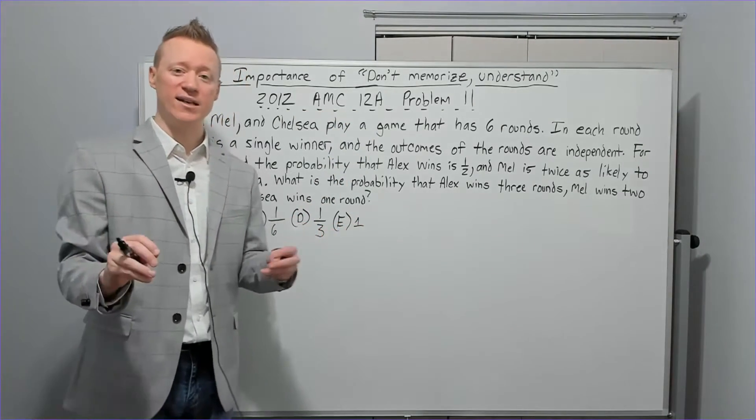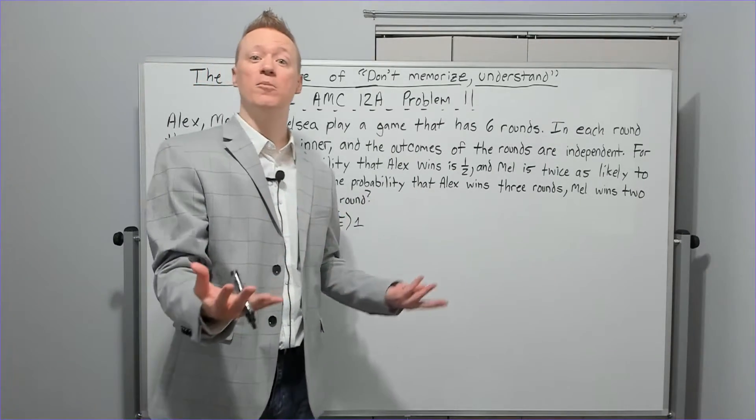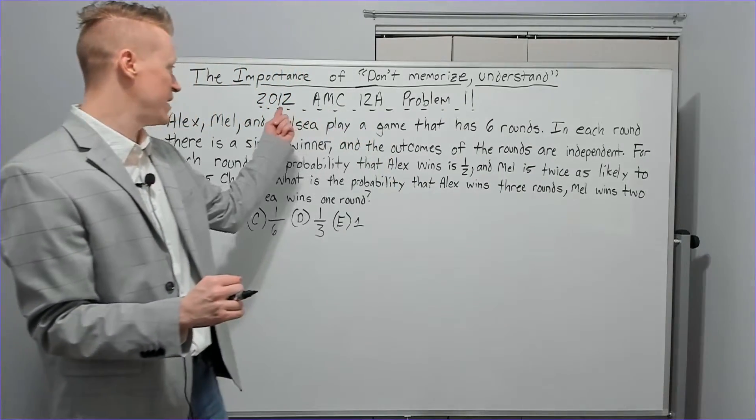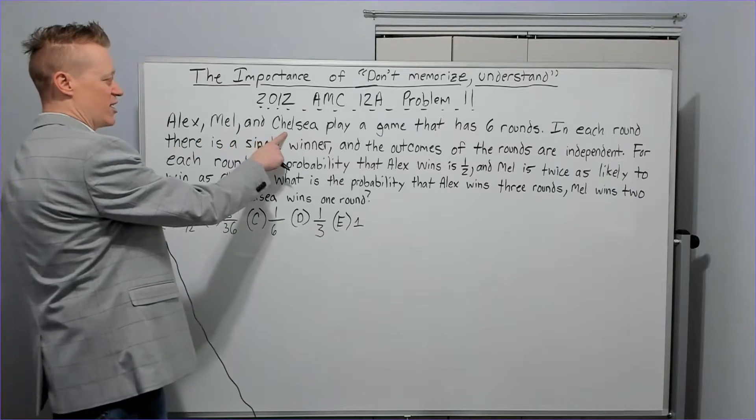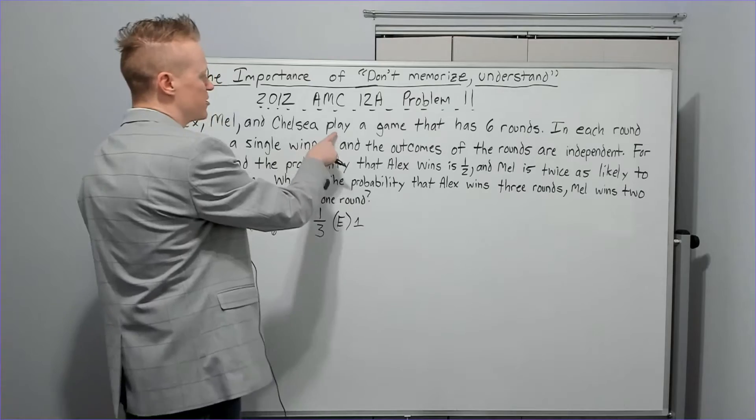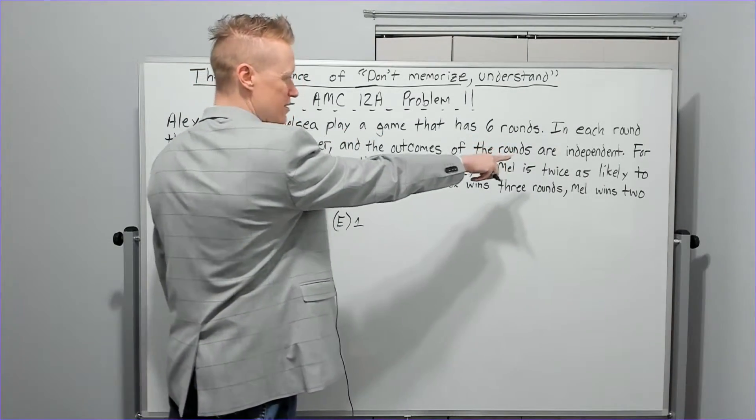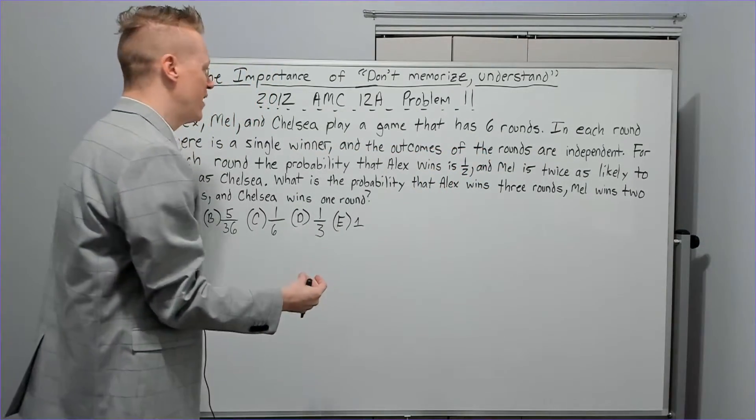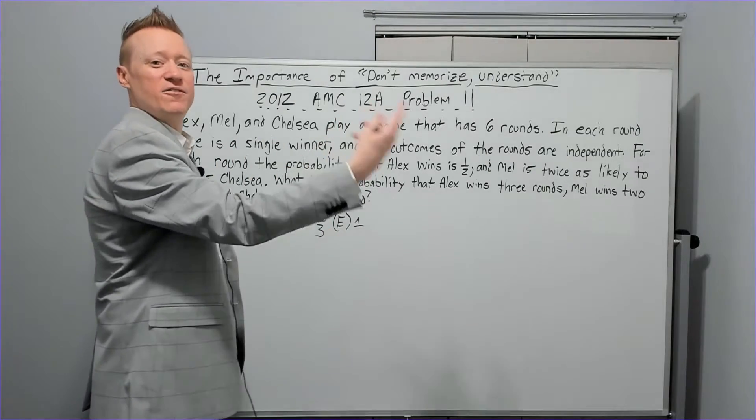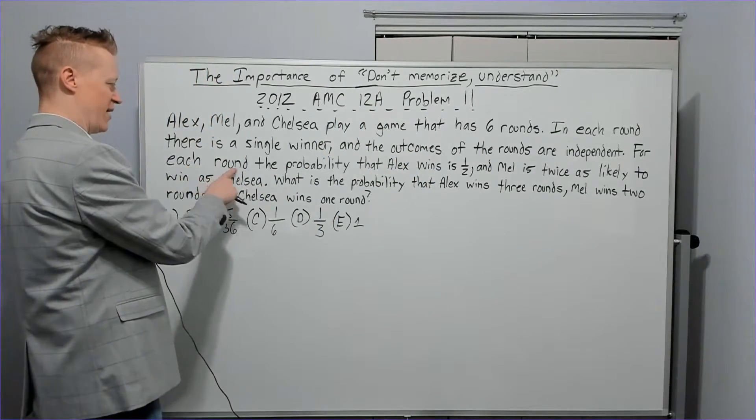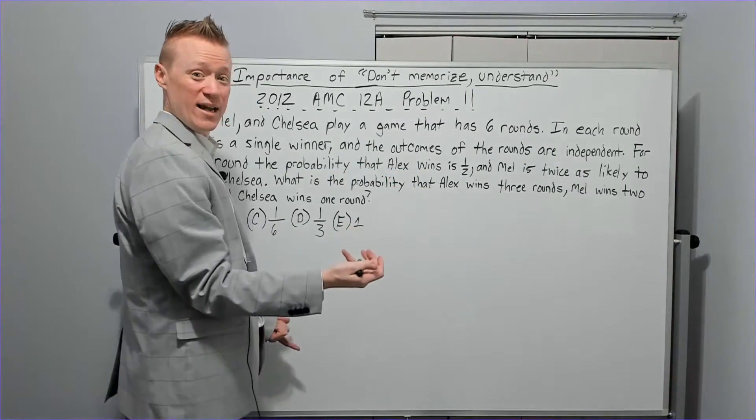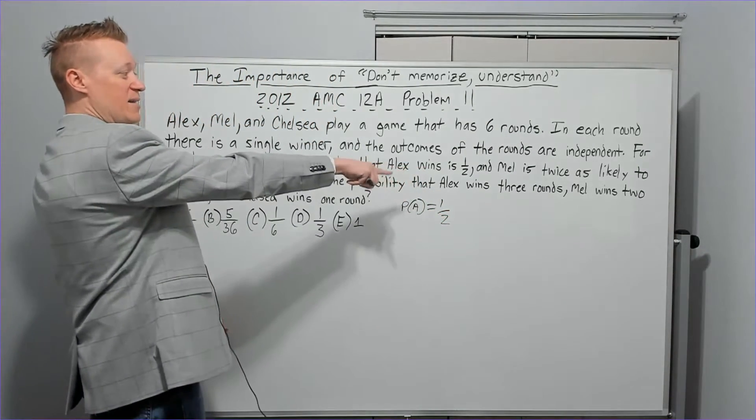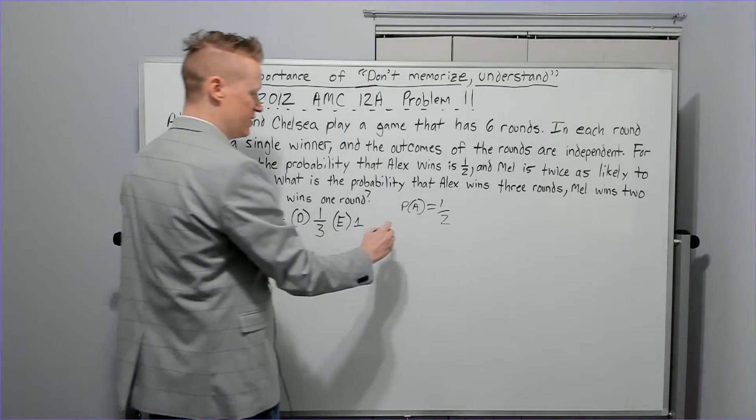So then the 2012 AMC 12A problem 11. Remember this is the upgraded twist on the binomial probability. I think up to this point I'd never quite seen a problem like this on any of the AMCs at this point, meaning 2012. Alex, Mel and Chelsea, you get it, right? AMC, right? That's cute. So they play a game that has six rounds in each round. There is a single winner and the outcomes of the rounds are independent. So in other words, if somebody wins one round, it doesn't affect who wins the next round. For each round, the probability that Alex wins is one half. So probability of A is one half.